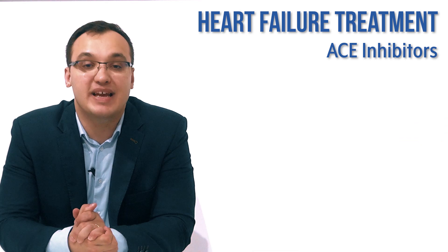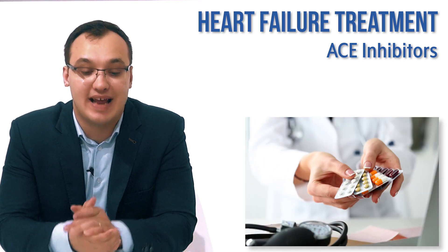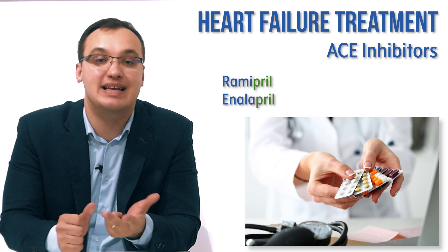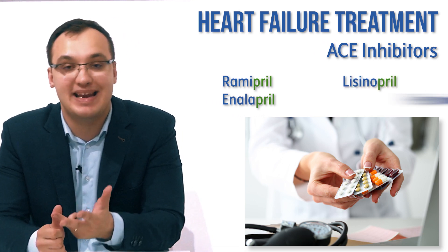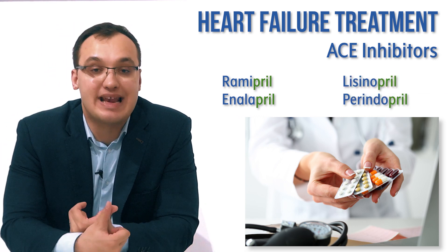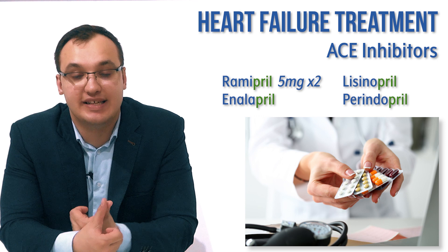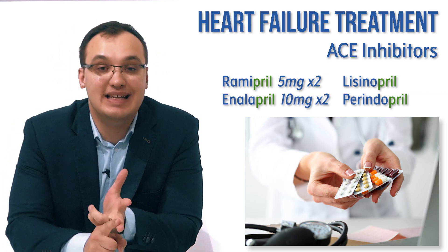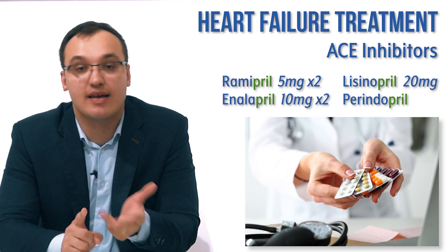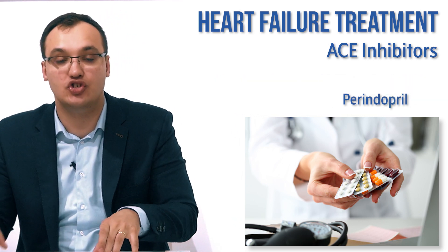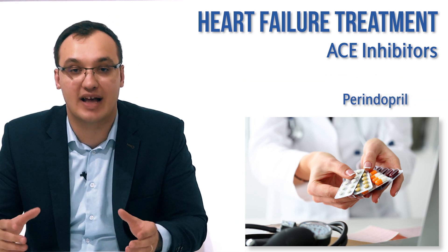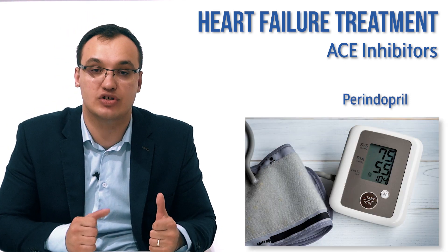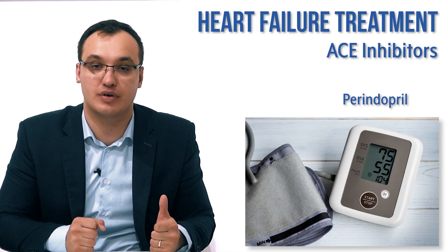We have medications that are ending with '-pril': ramipril, enalapril, lisinopril, perindopril. The doses are ramipril 5mg twice a day, enalapril 10mg twice a day, lisinopril 20mg once a day. Perindopril is used when we get the side effect of hypotension, which is a low level of blood pressure.